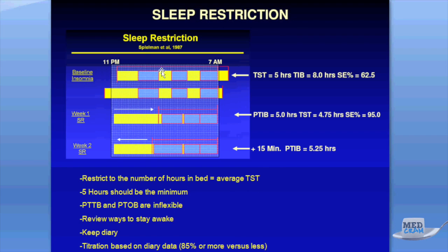Graphically: at baseline insomnia, say 11 PM to 7 AM, the patient only sleeps five hours. We push the sleep window forward so they cannot sleep until a restricted time. If they maintain 95% sleep efficiency, they get to go to bed a little earlier in week two. The key is to restrict hours in bed to around average total sleep time, never below five hours. Time in bed and out of bed are inflexible. Ways to stay awake during the restricted period should be reviewed, and the sleep diary is their ticket to earn back more sleep time.